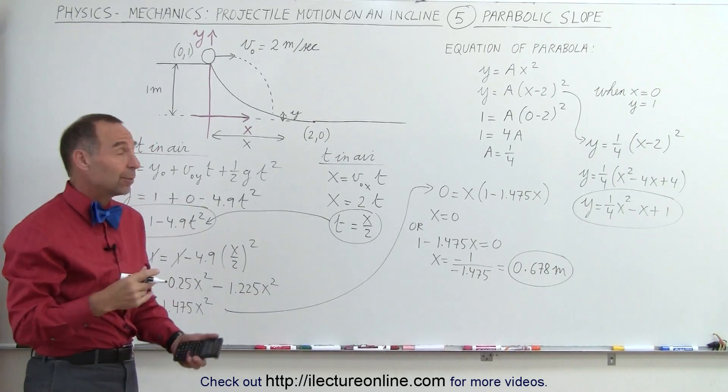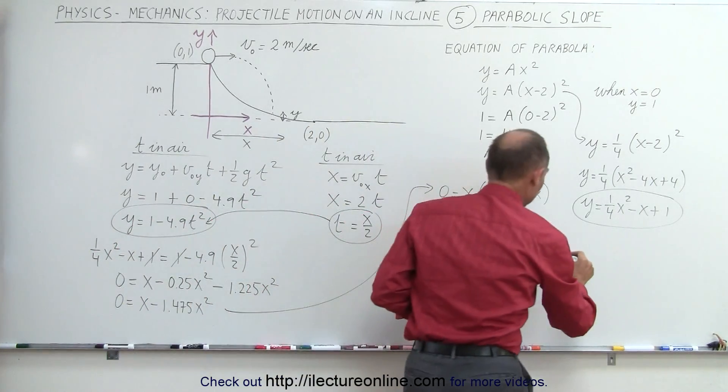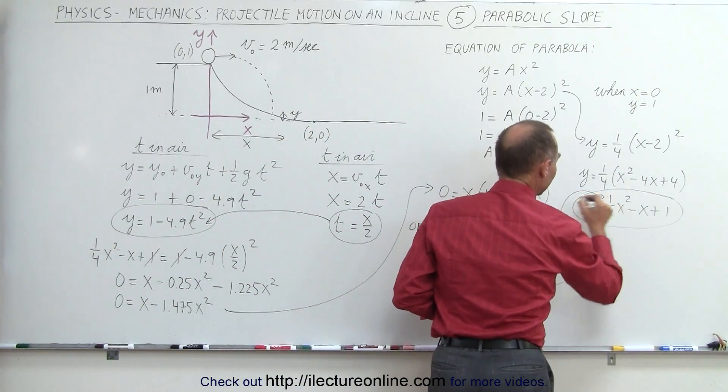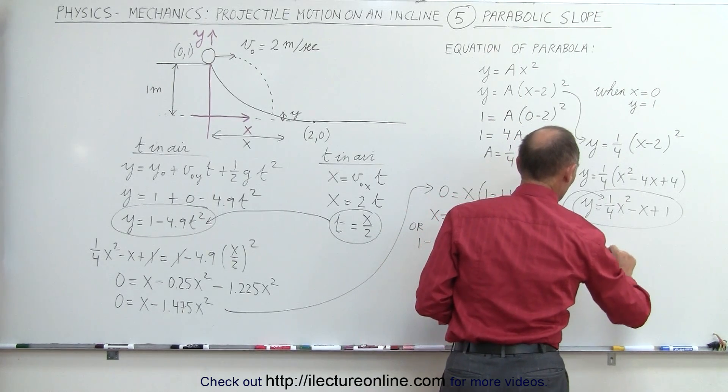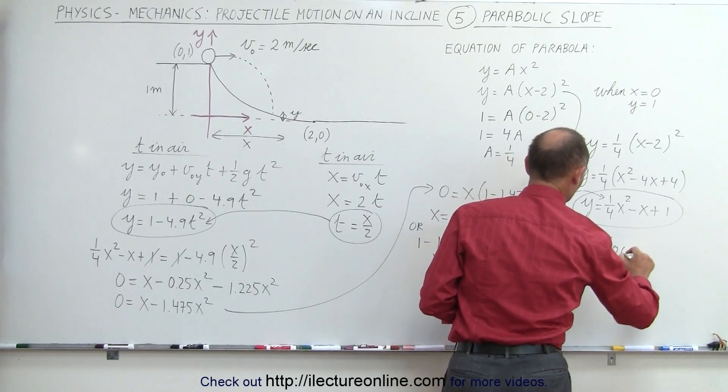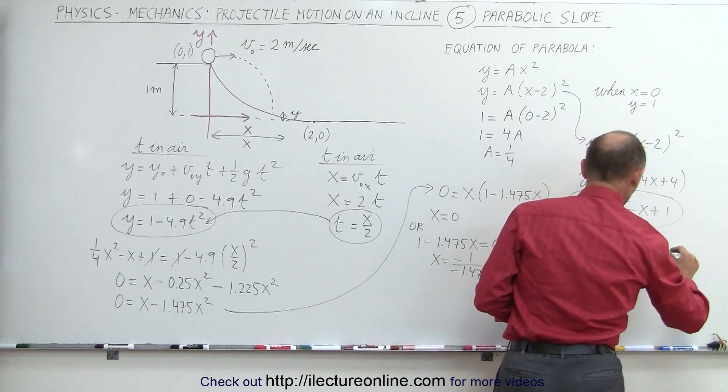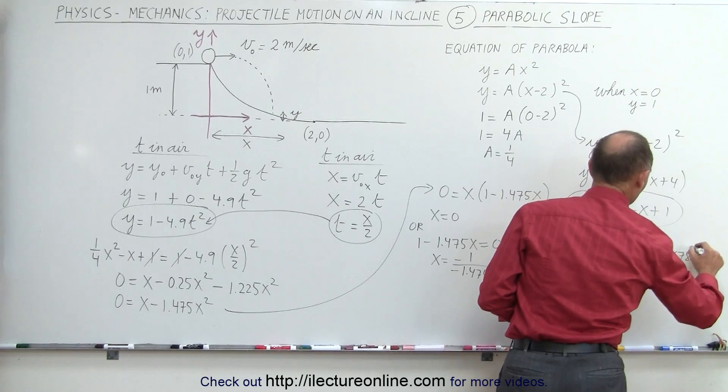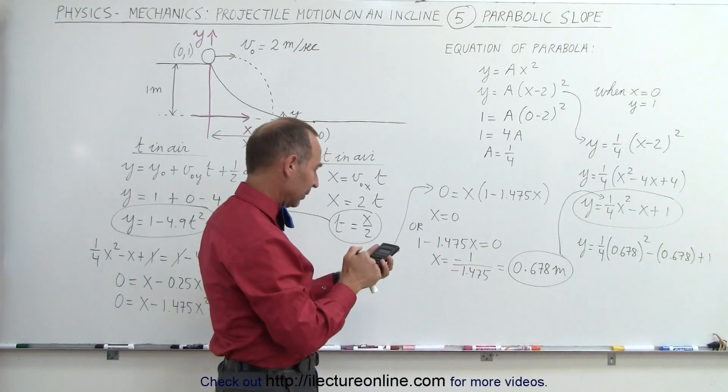Okay, what do we do next? Well, now we also need to know the y position, and to do that we can plug in this value for x in this equation. So y is equal to 1 quarter times 0.678 squared minus 0.678 plus 1.